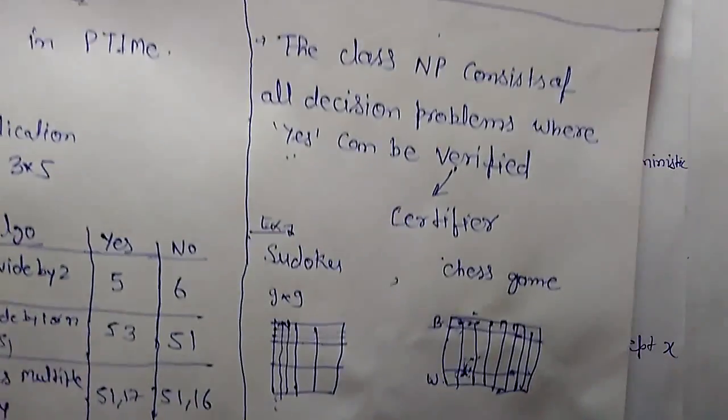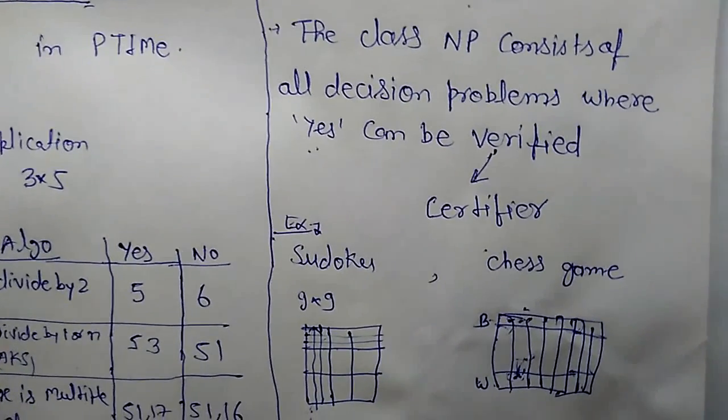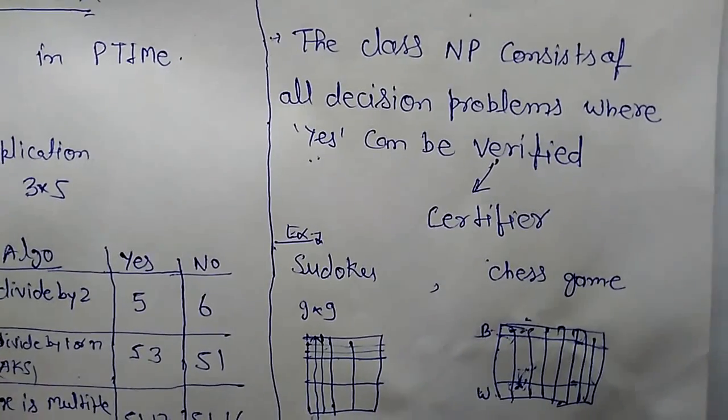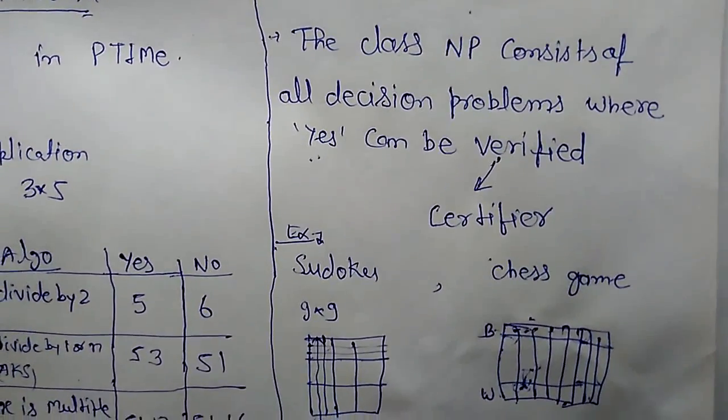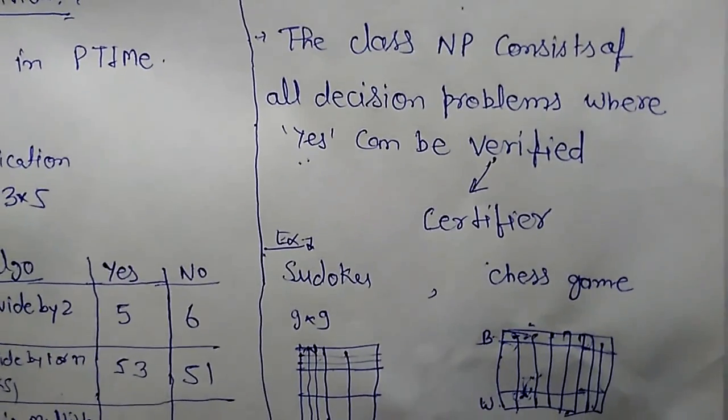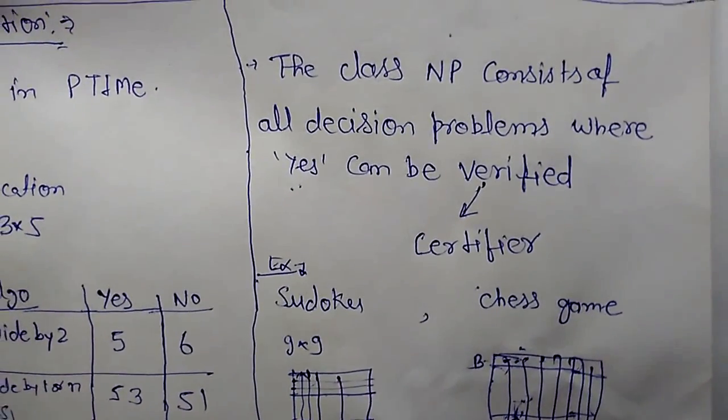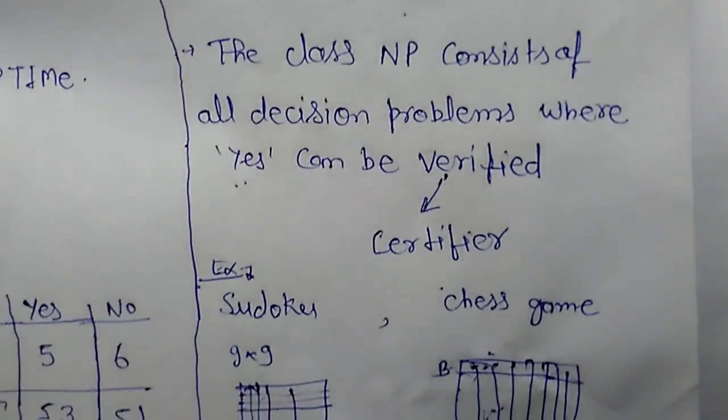In the last class we saw that the class NP consists of all decision problems where 'yes' can be verified or certified. There is a certifier that verifies the solution. So what about 'no'? That we will consider in Co-NP.